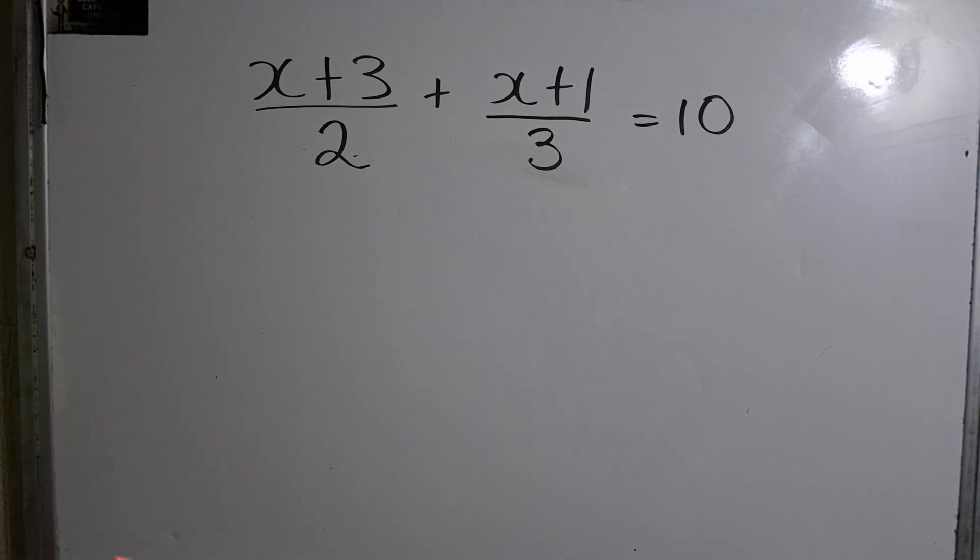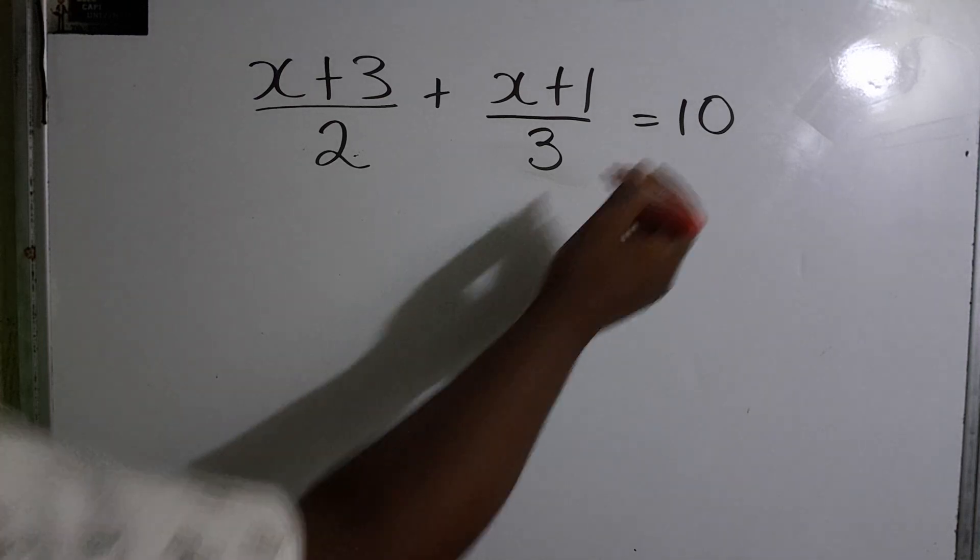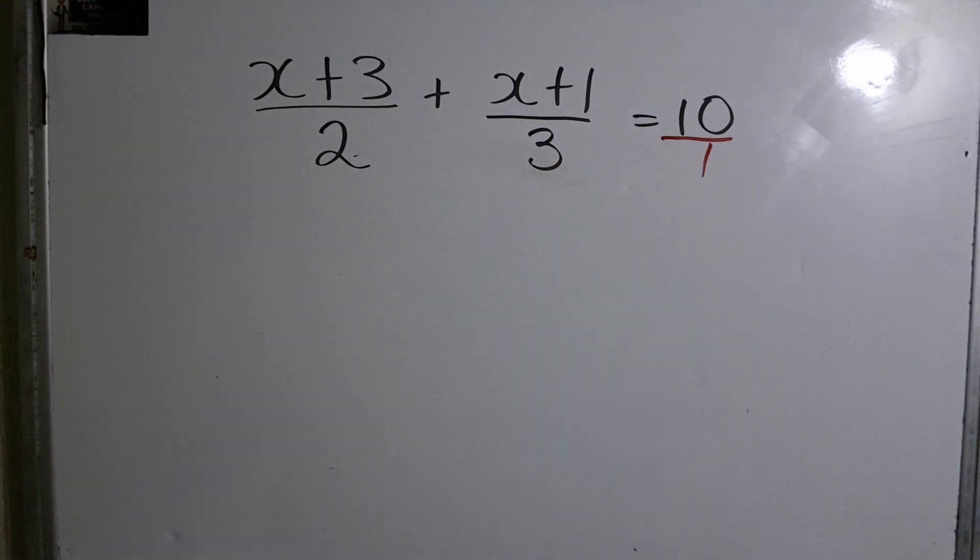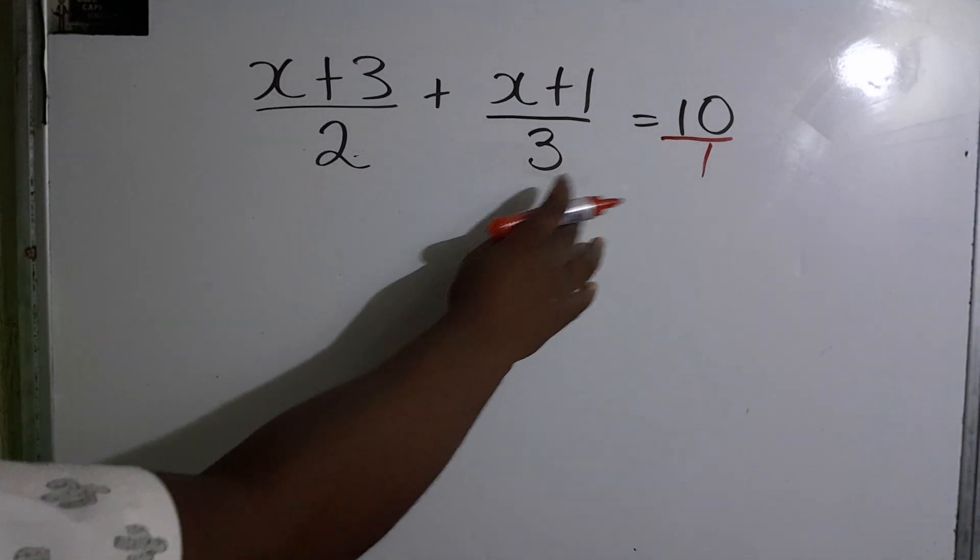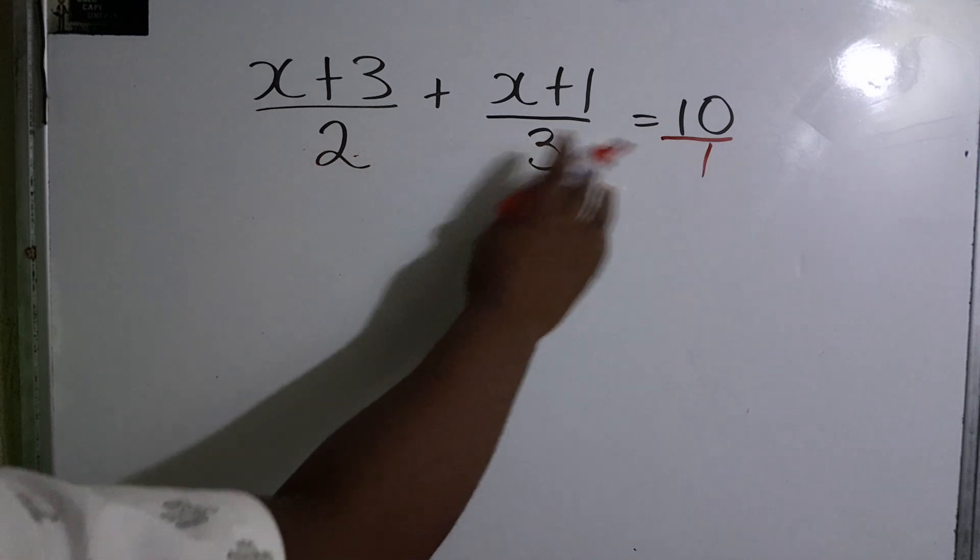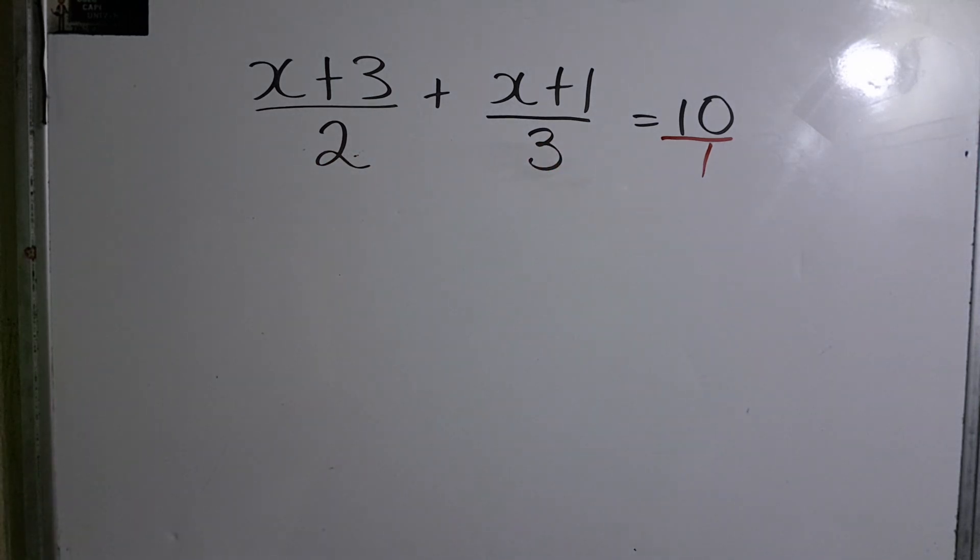Let's look at another. We have x plus 3 divided by 2 plus x plus 1 over 3 is equal to 10. So the first thing we want to do, we want to put this... So all of them is basically a fraction. We find our LCM of these three numbers, the 2 and the 3 and the 1 which would be 6.